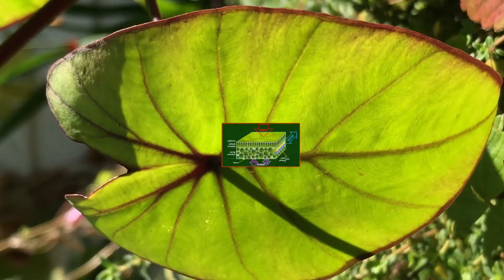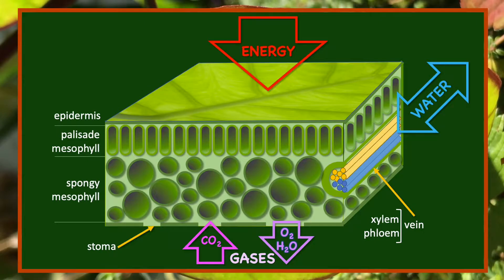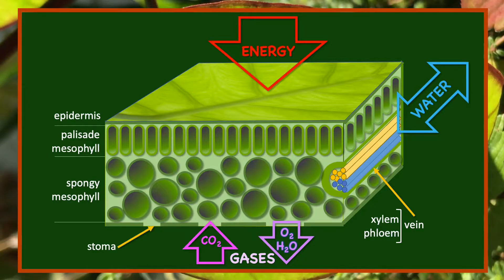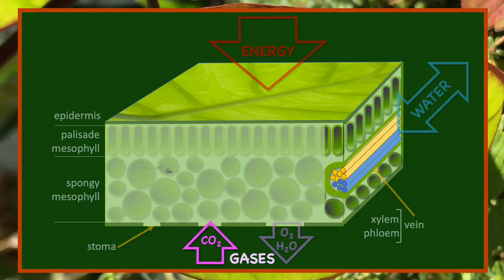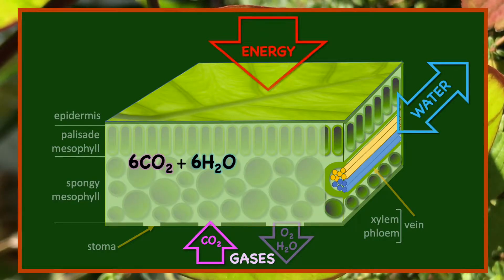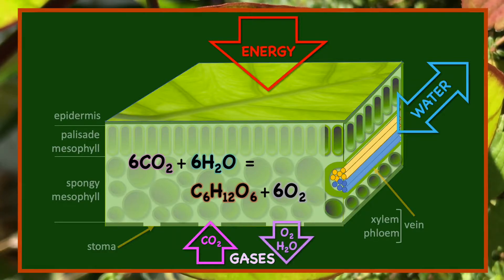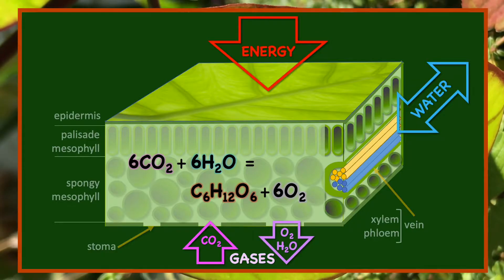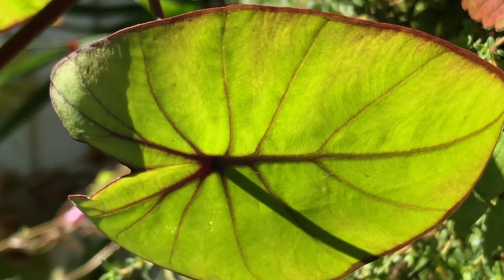In a leaf, chloroplasts near the upper surface capture energy from the Sun. The lower leaf surface contains pores called stoma that allow gases to flow in and out, and veins bring water from the roots to the leaves. Sunlight drives the chemical reaction between water and carbon dioxide that produces carbohydrates like glucose, and then the remaining oxygen exits the leaf through the stoma, and the carbohydrates move through the vein system, building the biomass of the tree.